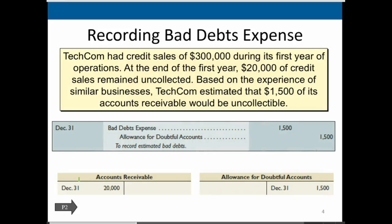Regarding recording bad debt expense: Techcom had credit sales of $300,000 during its first year of operations. At the end of the first year, $20,000 of the credit sales remained uncollectible. Based on the experience of similar businesses, Techcom estimates that $1,500 of its receivables will be uncollectible. People haven't come in and said they won't pay, but we should tell our readers it's very likely that amount will not be collectible based on past or industry experience.